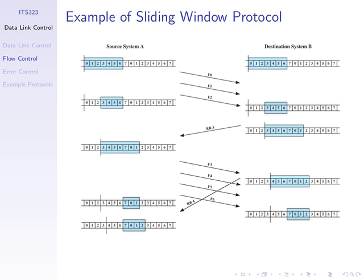After receiving frame three and processing it, the receiver is ready to receive frame four, hence sends back RR4. We are transferring data over a connection over a long period of time. We continue using the same set of sequence numbers, wrapping around where needed. This diagram shows a sequence of possible frames — anything to the left of the vertical line has been received and acknowledged, and the blue rectangle indicates the frames we're allowed to receive.